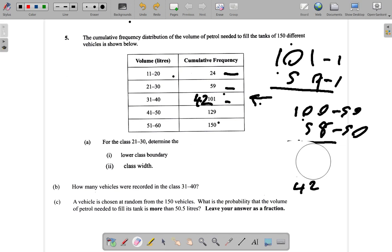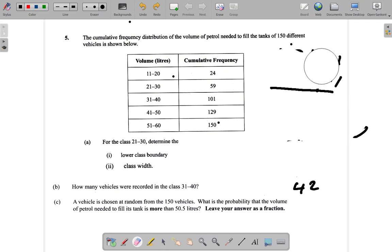Now remember, this was a cumulative frequency table. So you had 24 in this class. Now what was here? How the 59 came here—there was a certain number here that plus 24 gave 59.